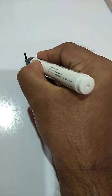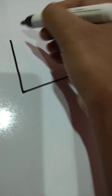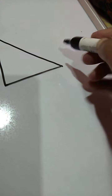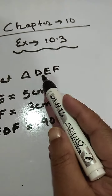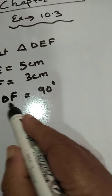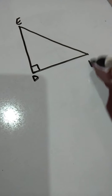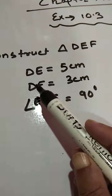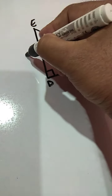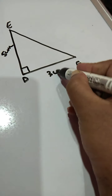Let us first draw the rough sketch of the drawing. Since it is a right angle triangle, we have drawn a right angle triangle. The name of this triangle would be EDF, because angle D is 90 degrees so we name it as EDF. According to the question, DE measures 5 cm and DF measures 3 cm.